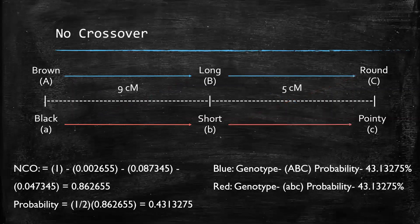Finally, we have our no crossover events. There are two possible gametypes because there are two possible no crossover events. Following the blue arrows, we can see our first gametype is big A, big B, big C. Following the red arrows, we can see our second gametype is little A, little B, little C.